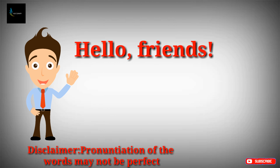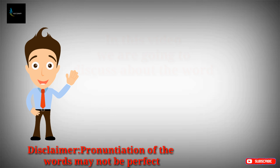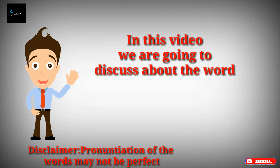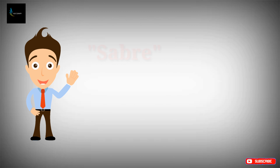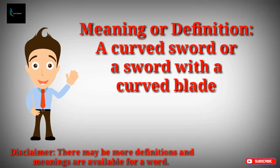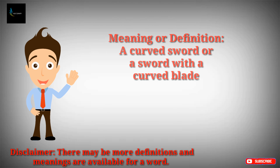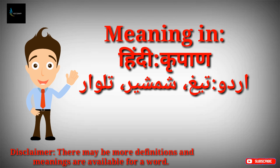In this video we are going to discuss the word 'saber'. The definition or meaning of saber in English is a curved sword, or a sword with a curved blade. Saber in Hindi is 'kripan', and in Urdu it is 'teg', 'shamshir', and 'talwar'.